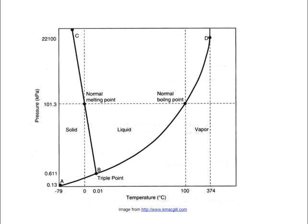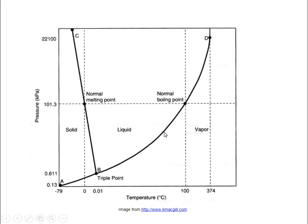The lines on a phase diagram — labeled A to B, B to D, and B to C — represent conditions where two phases are in equilibrium, meaning the rate of transition to one phase equals the rate going to the other. On the liquid-vapor line, you have liquid and vapor water in equilibrium — that's the boiling point at that pressure. On the solid-liquid line you have solid and liquid in equilibrium, and on the solid-vapor line you have vapor and solid in equilibrium.